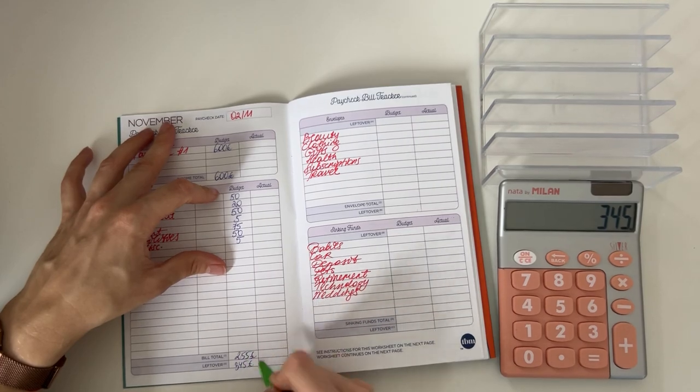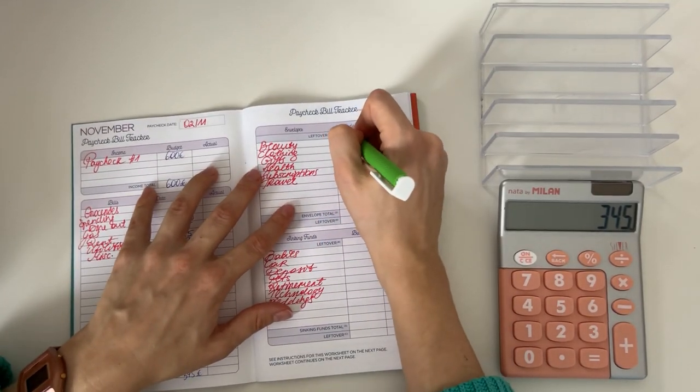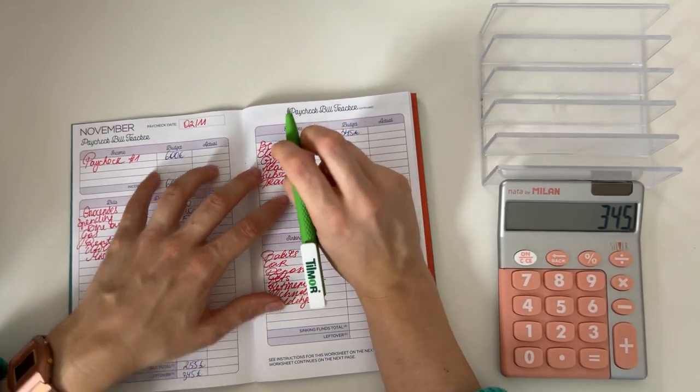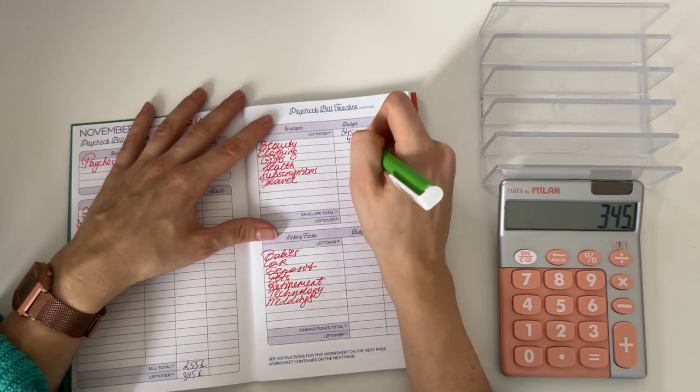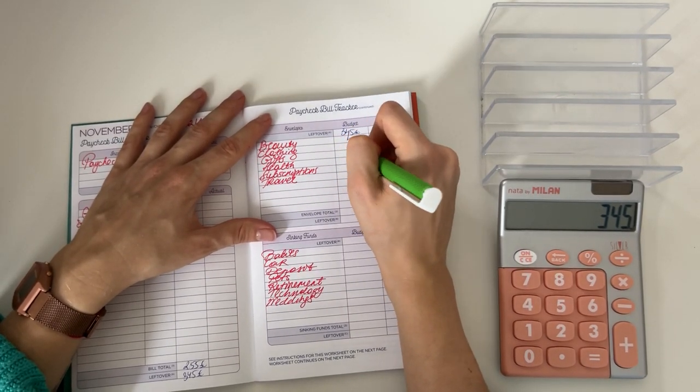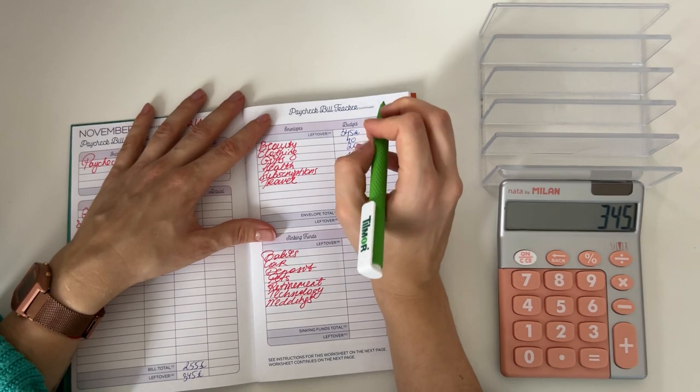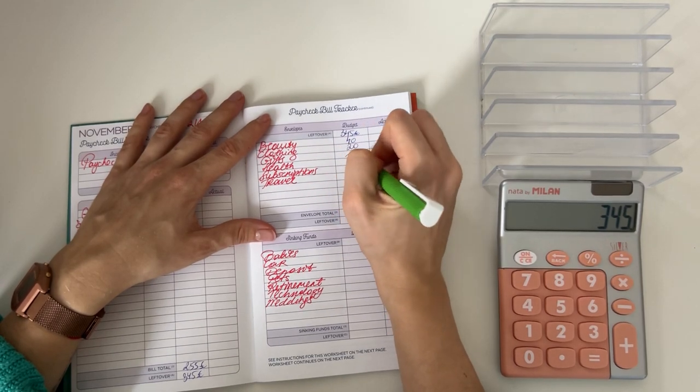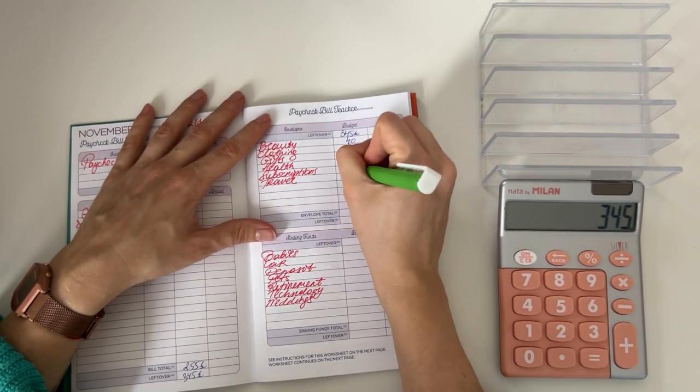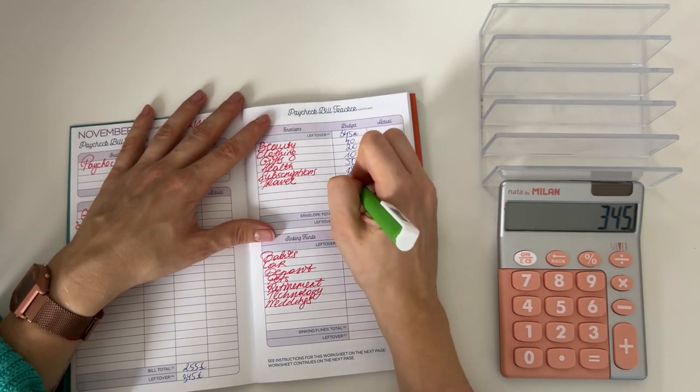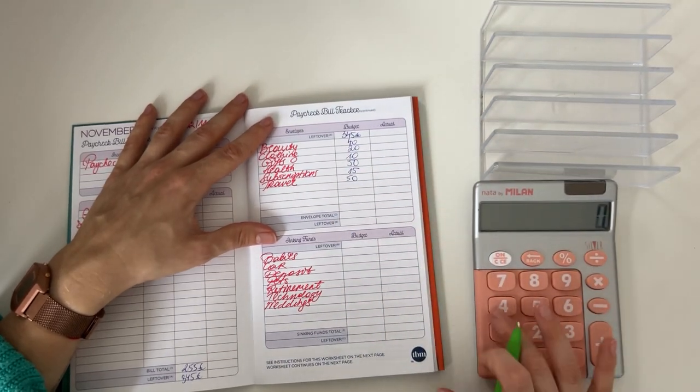So in total that is 255 euros. So 600 minus 255 is 345. We're bringing that here to short term sinking funds. We're gonna put 40 in beauty, 20 in clothing, 10 into gifts, we're putting 50 into health, 15 in subscriptions, and 50 in travel.